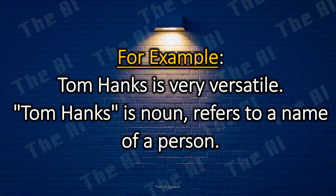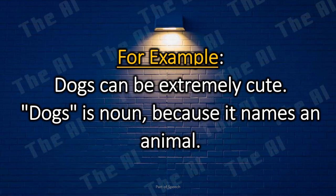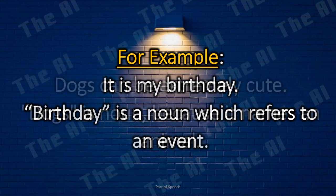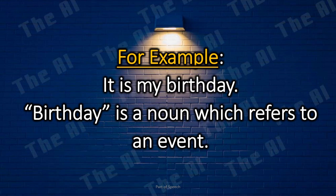Examples: Tom Hanks is very versatile. Tom Hanks is a noun, referring to the name of a person. Dogs can be extremely cute. Dogs is a noun because it names an animal. It is my birthday. The word birthday is a noun which refers to an event.